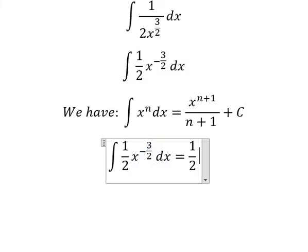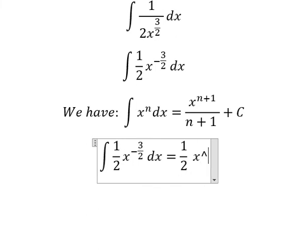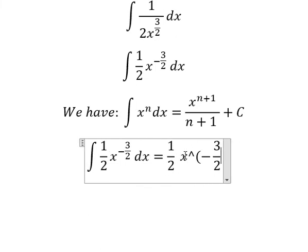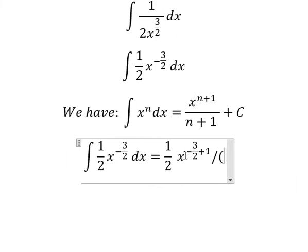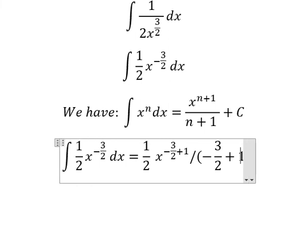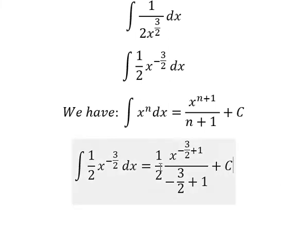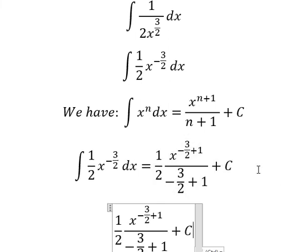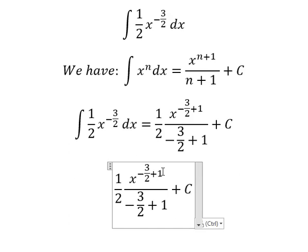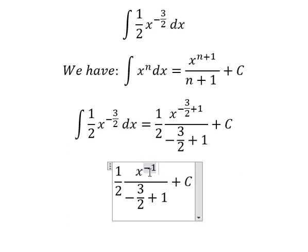...will have one over two x to the power of negative three over two plus one, over negative three over two plus one, and we add C. This gives us negative one over two.